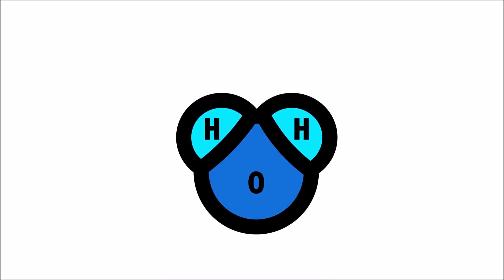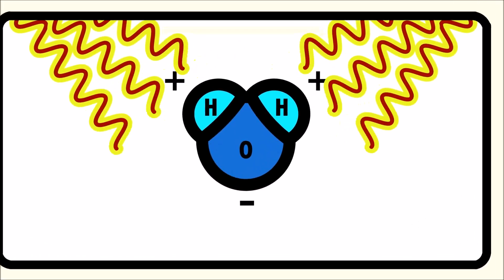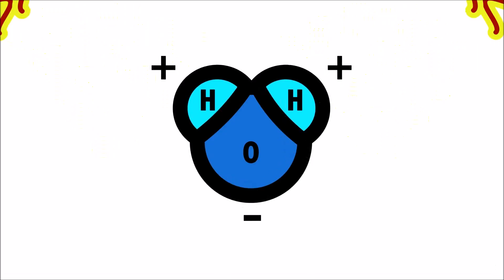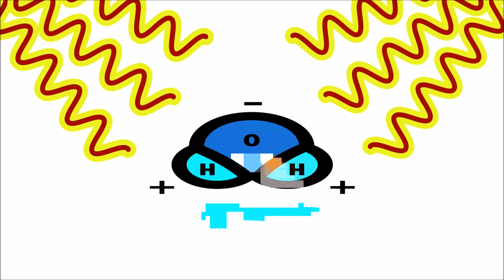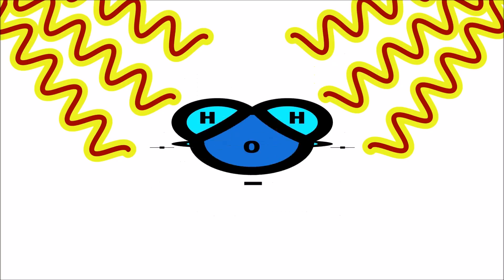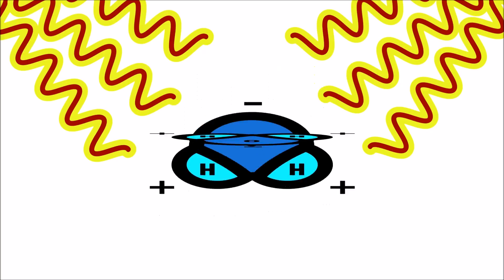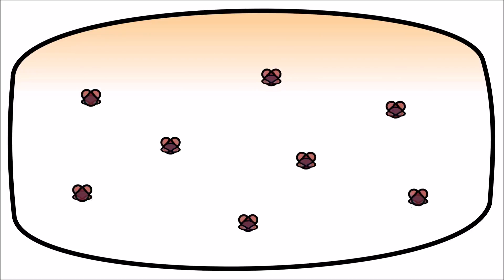Even soap has water inside it. Water is a molecule that has a negative end and a positive end. Inside a microwave oven, tiny waves, or microwaves, are sent out and make the two ends of the water molecules spin back and forth really fast. As the molecules move more and more quickly, they generate heat.